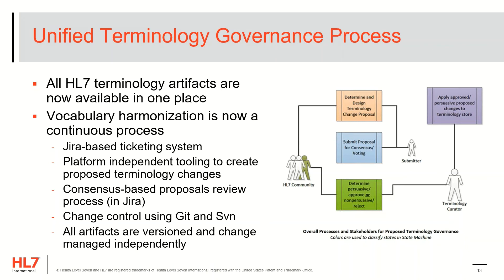The UTG vocabulary maintenance process relies on a JIRA-based ticketing system that supports the workflow needed to implement vocabulary changes. Previous requests were created using Word documents, GForge tickets, and emails, so there never was any transparency or central repository to see all proposals. The UTG process uses platform-independent tooling so that the vocabulary change submitter can create the terminology changes. Changes were previously done using rich text editors, which often led to typos and errors in the content. The vocabulary change proposals go through a consensus-based workflow where reviewers can vote on the approval of changes. Once requested changes are approved, changes are managed using Git and Subversion, and through this process, all artifacts are versioned and change-managed independently. These improvements provide a more responsive and transparent method for vocabulary maintenance that we believe will benefit the community.